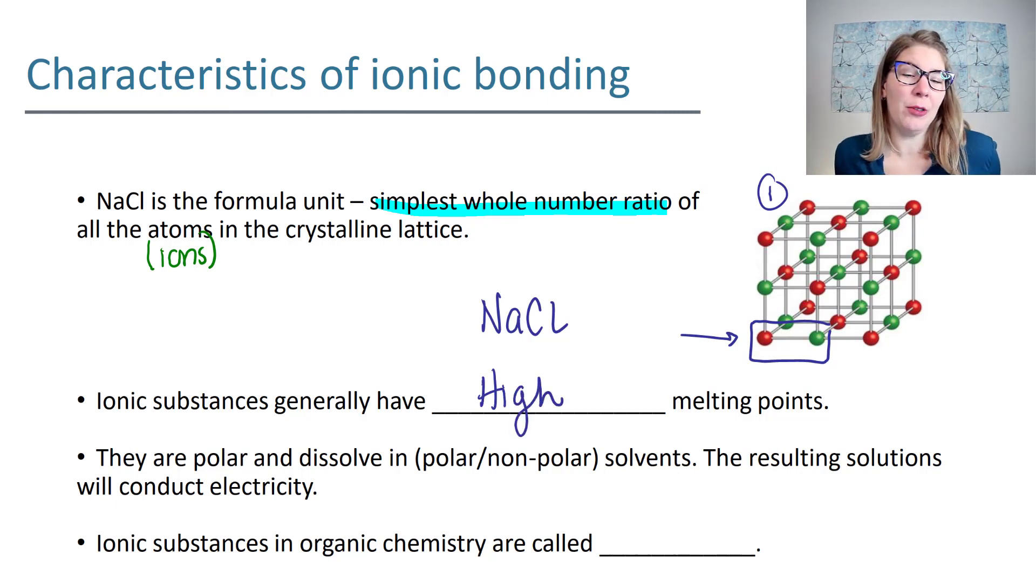Because ionic compounds are polar they are going to dissolve in polar solvents. You probably remember from general chemistry hearing somebody say like dissolves like and that's just a simple way to say polar compounds dissolve polar compounds. Ionic compounds are the ultimate polar compounds because they have one entity that's completely positive and one that's completely negative.